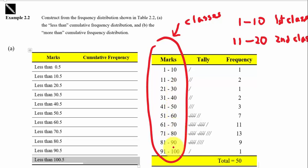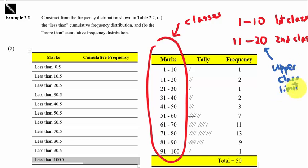For each class, there are class limits and class boundaries. For example, in the second class, the 20 is called the upper class limit, while 11 is the lower class limit. So each class has two limits: one upper limit and one lower limit.